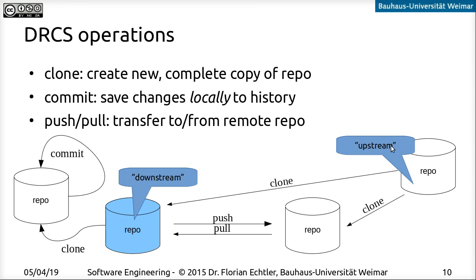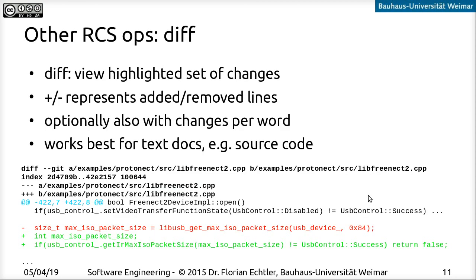Common terms in the context of distributed version control systems: the repository you cloned from and push your changes to is called upstream, and your repository on your local machine is called downstream. You can even have chains of several repositories where one is downstream from another, and changes can propagate through several repositories. This is actually how a lot of open source development happens.